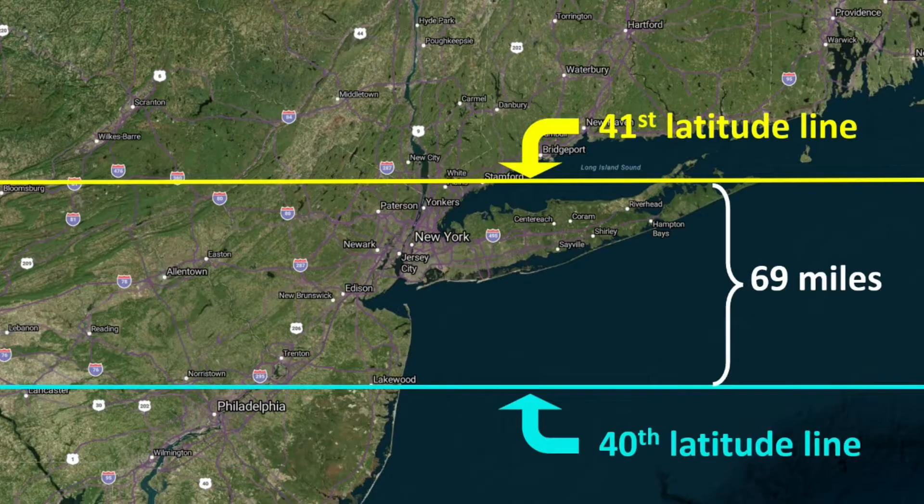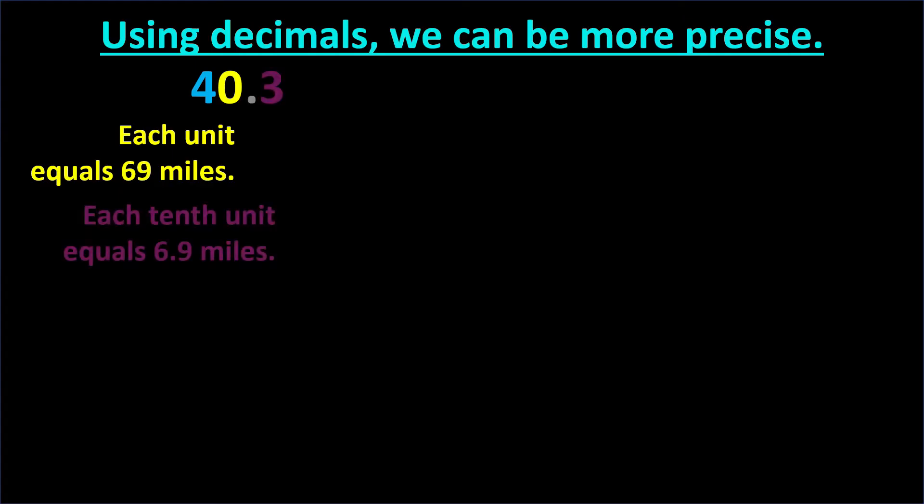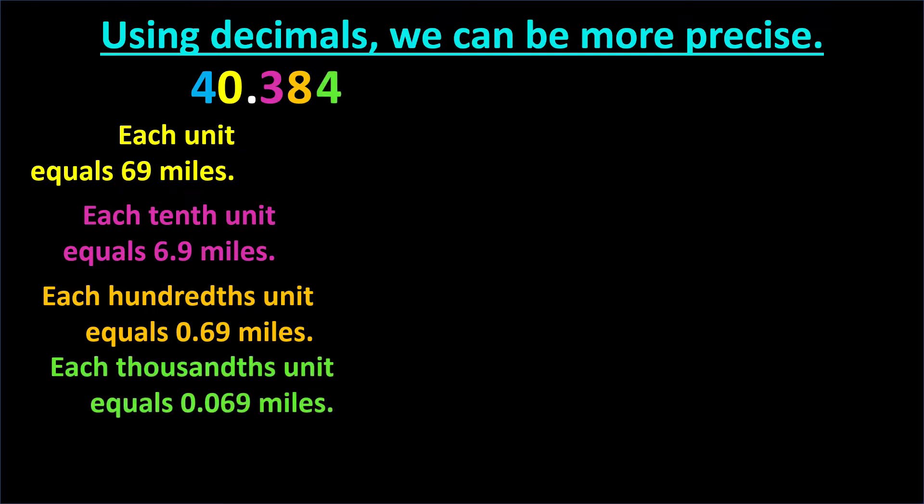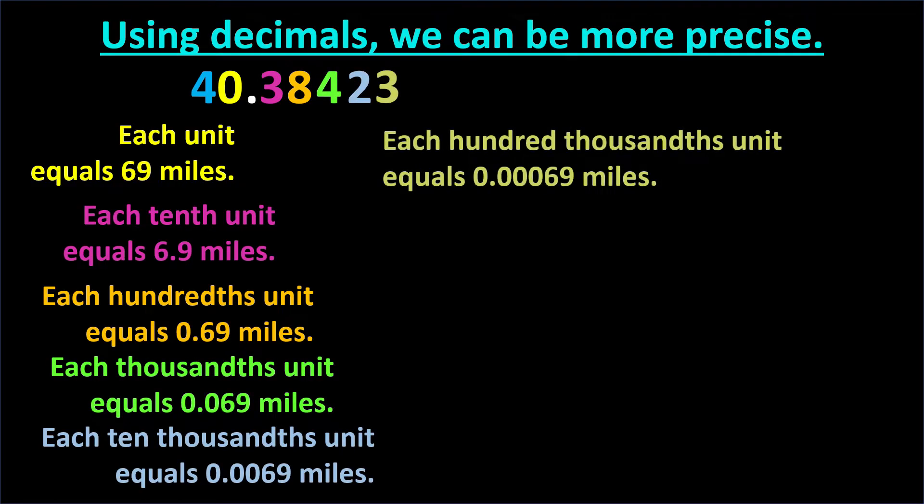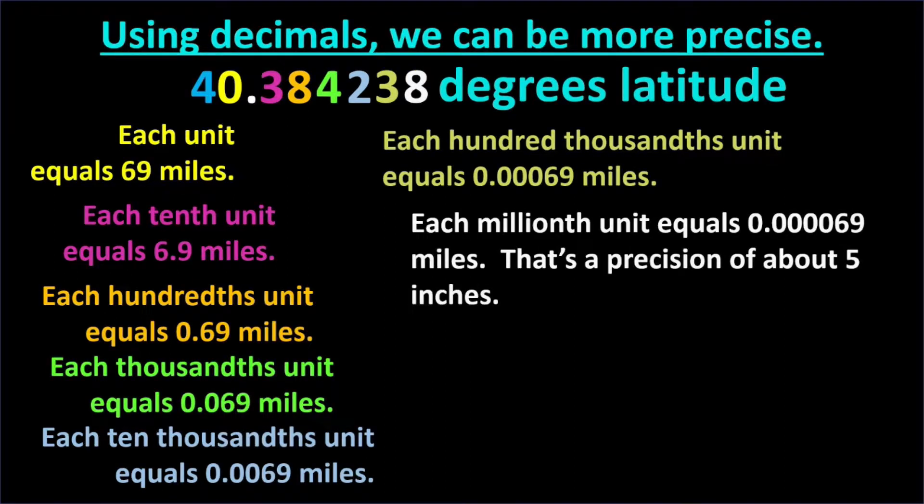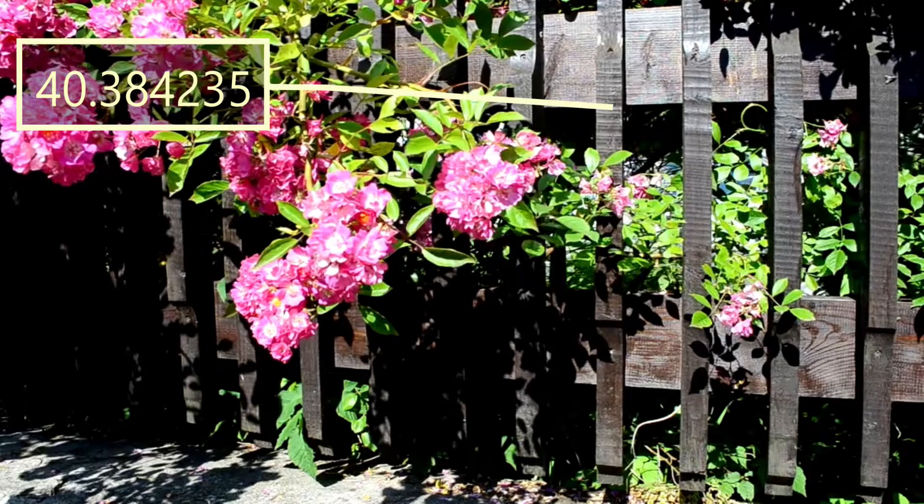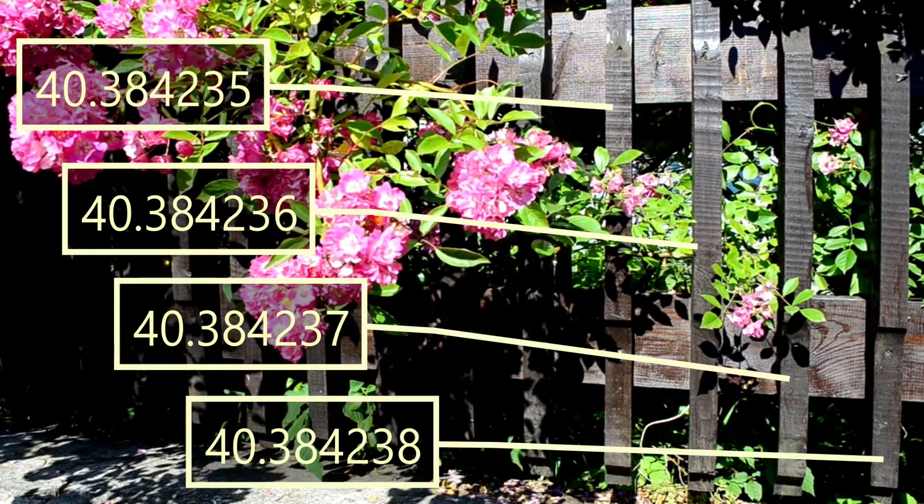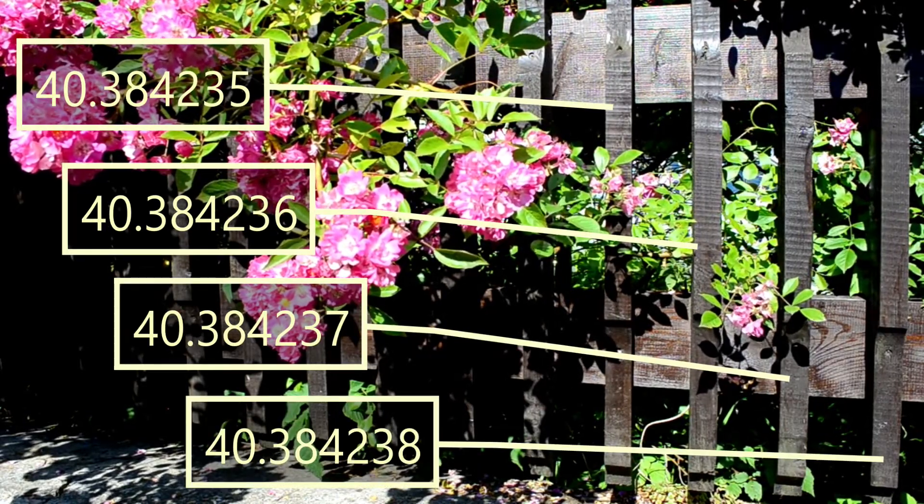This may seem like too few lines to make a useful grid, but we can increase the precision by 10 times every time we add a place value to the right of the decimal point. For example, by the time we reach 6 decimal points, the difference between lines of latitude are less than 5 inches. With that precision, we could distinguish the location of each picket in this fence.